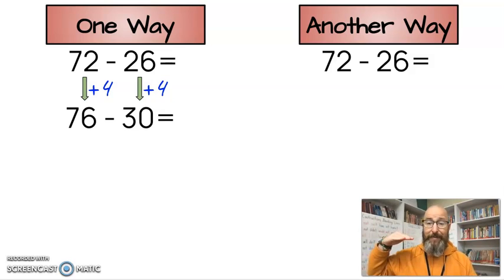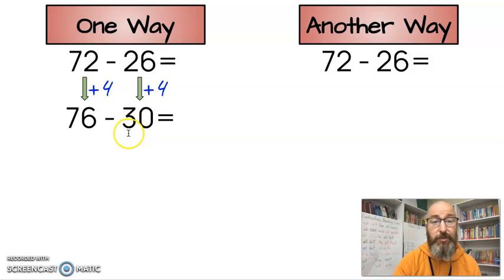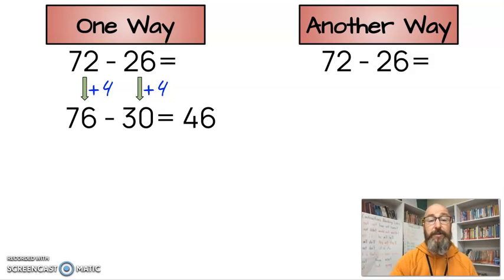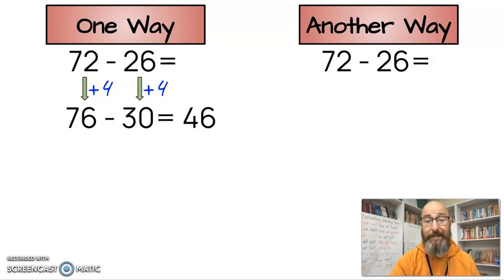And I tell my class to think about that hundreds chart that we've looked at so many times this year. So we're going to move up the hundreds chart three times because there's three tens in 30. So if I think about that, I'm going to jump up three times. So I have 76. Again, three jumps. 66, 56, 46. So 76 minus 30 is 46, which means 72 minus 26 equals 46.